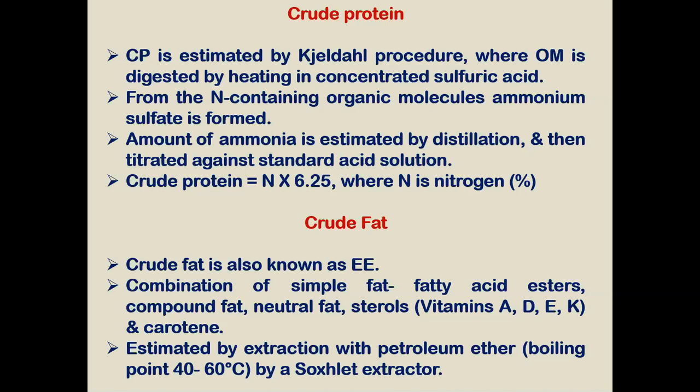Crude fat, also known as ether extract, is a combination of simple fat, fatty acids, compound fats, neutral fats, sterols, different vitamins, and carotins. This combination can be extracted from the feed by extraction with petroleum ether, whose boiling point is 40 to 60 degrees centigrade. A Soxhlet extractor is used for extracting the fat molecules from the feed.